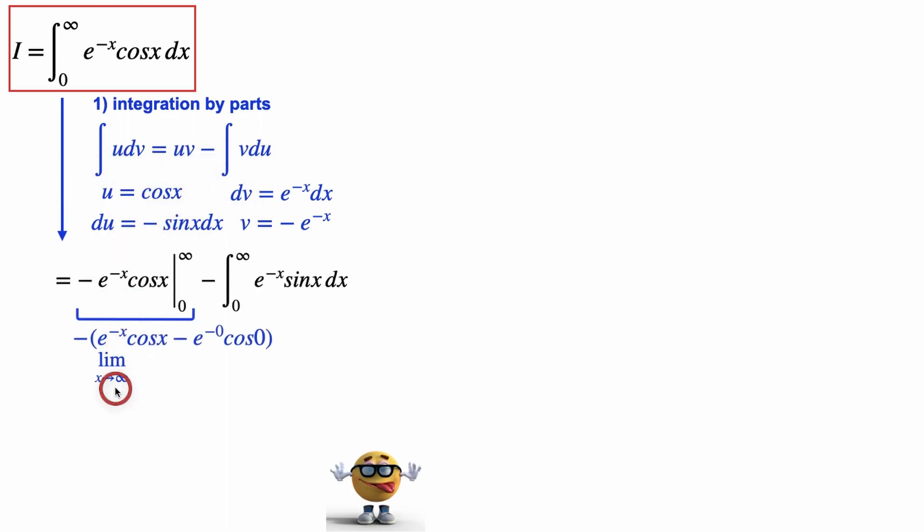Now this first term is pretty sweet. In the limit as x goes to infinity, this becomes 0 because there's a negative in the exponent. This is 1, e to the negative 0, and cos of 0 is 1, so this whole thing becomes positive 1, which is awesome. So the integral that we're trying to solve is 1 plus, and I brought this negative, this minus inside the integral, and I'll show you why very, very soon, the integral of negative e to the negative x sin x.